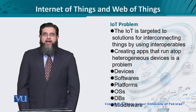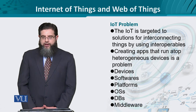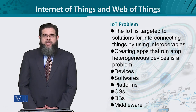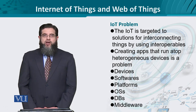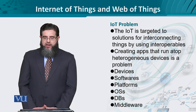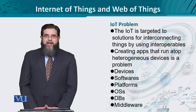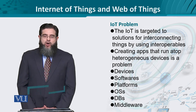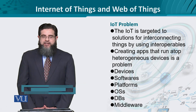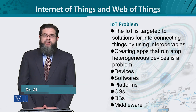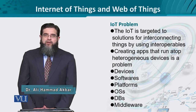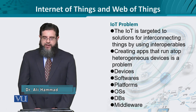Actually, we have a problem known as the IoT problem. IoT is a very good solution for a certain problem in a certain context, but when the context changes or if there is a change in the underlying technology, then the entire IoT architecture is changed vertically.